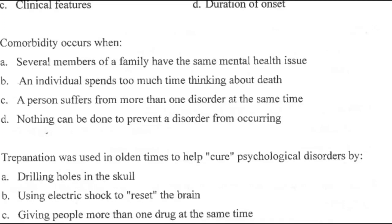Question 97: Comorbidity occurs when? Options included: several family members having the same mental issues; an individual spending too much time thinking about death; a person suffering from more than one disorder at the same time; or nothing can be done to prevent a disorder from occurring. Right answer is C — a person suffering from more than one disorder at the same time.